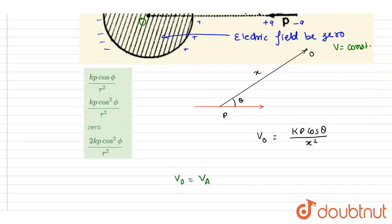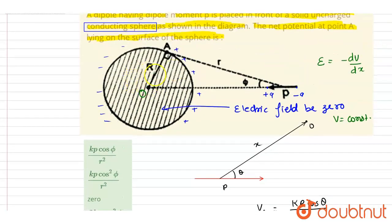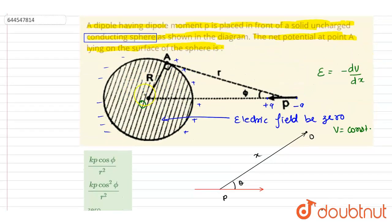It will be same. And at O, the potential will be what? Potential because of dipole plus potential because of induced charge. Now the net induced charge will be zero, right? Net induced charge can be non-zero? Net induced charge will be zero.